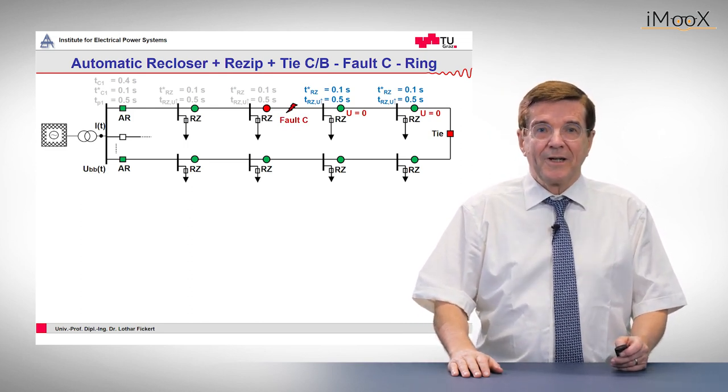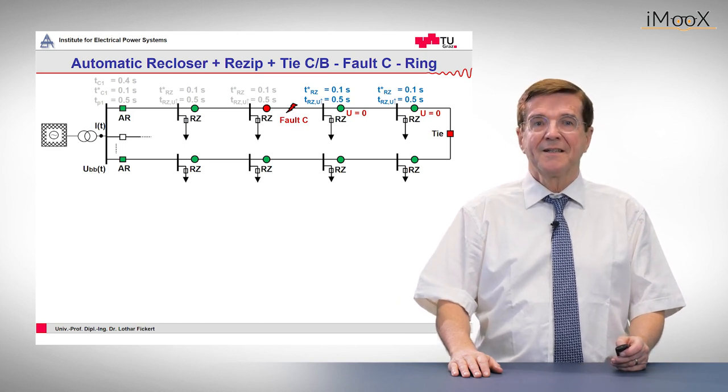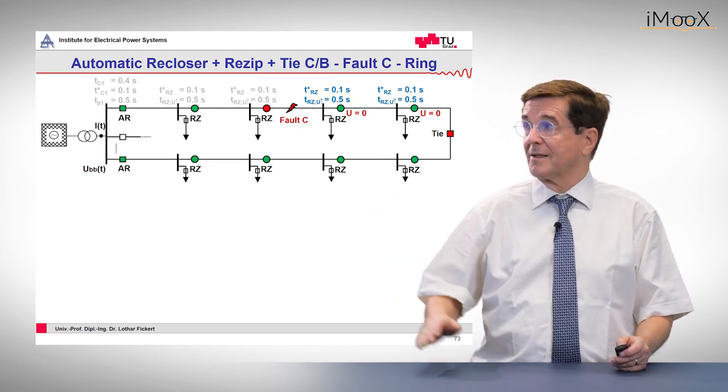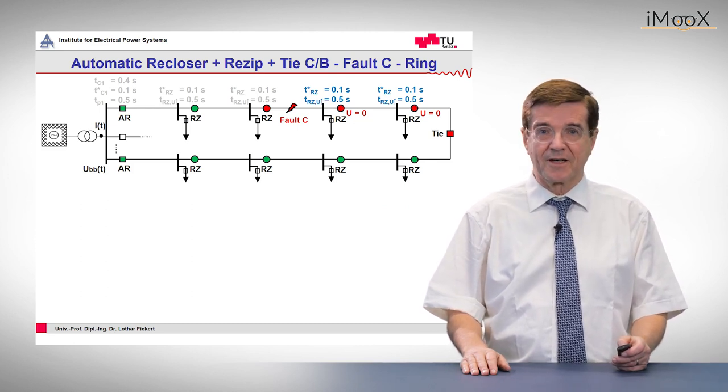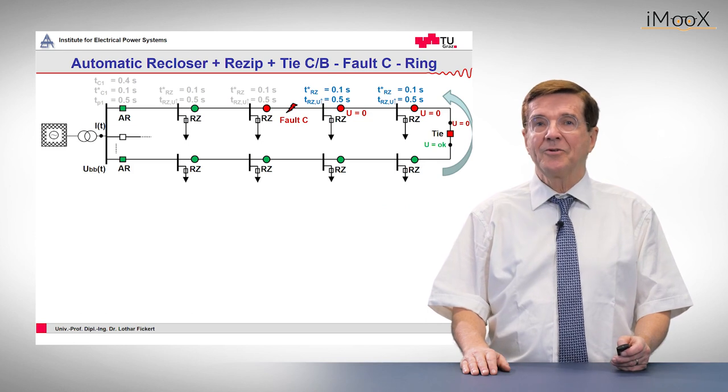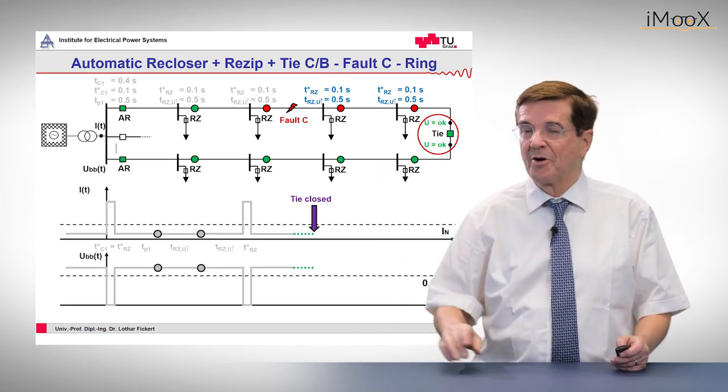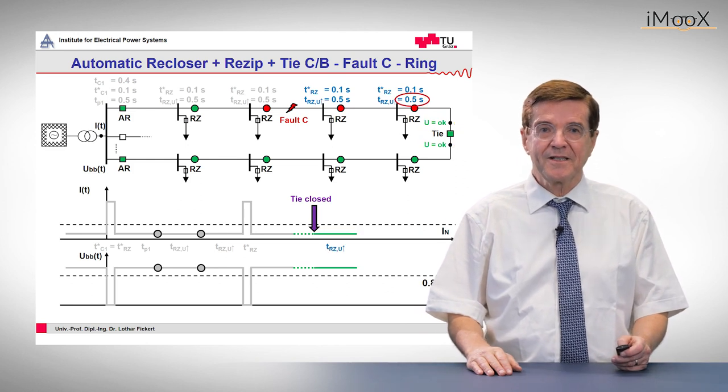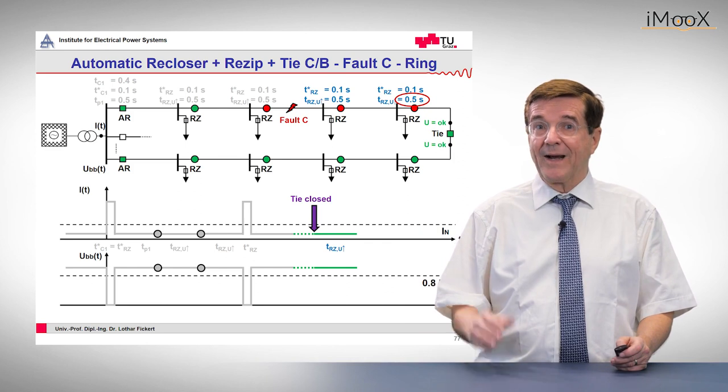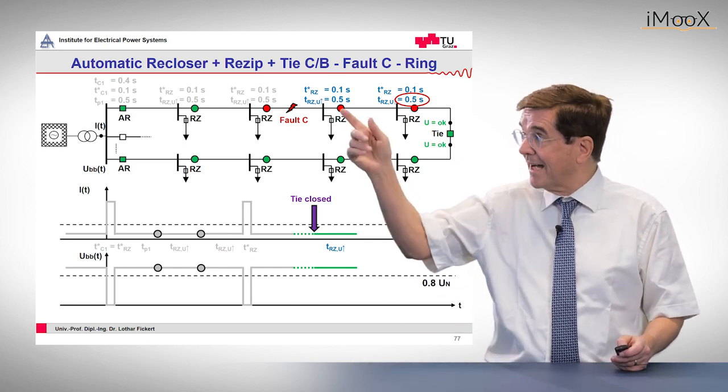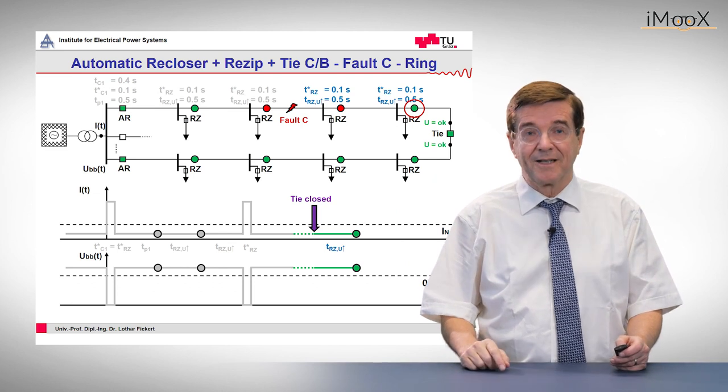So we finish with a fault at position C, as we have seen before. One auto recloser is open, all the others are closed, and now we re-energize the line from the rear side. So this is the moment when the tie breaker closes.